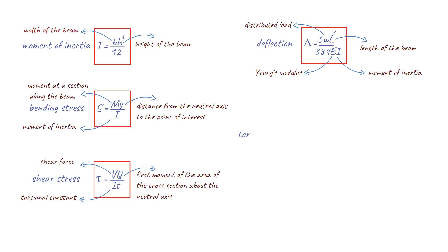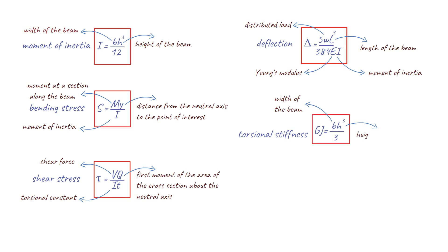Next, we have the formula for torsional stiffness of a beam. This is represented by the equation where b is the width of the beam and h is the height of the beam. This formula is used to calculate the resistance of a beam to torsional forces.